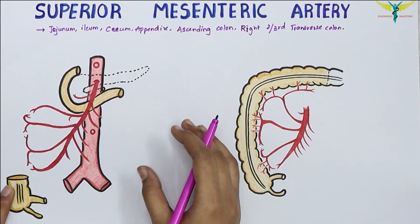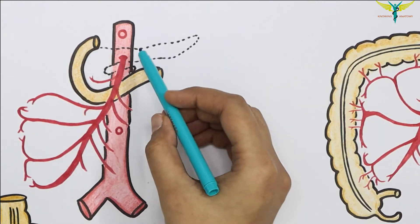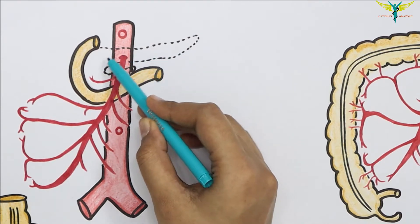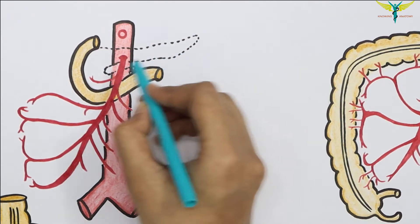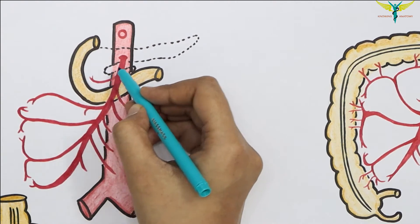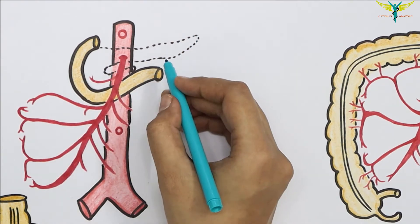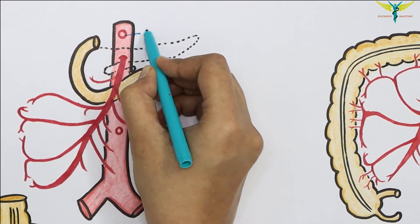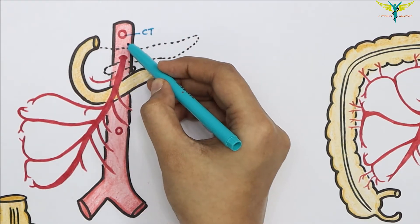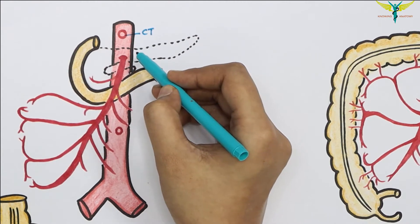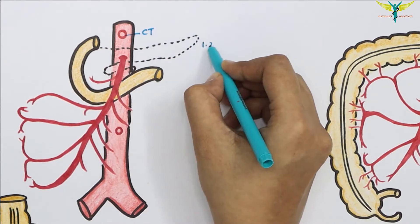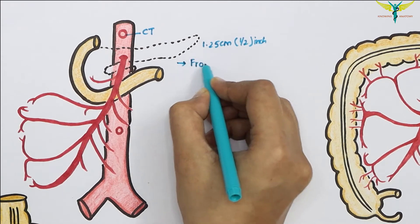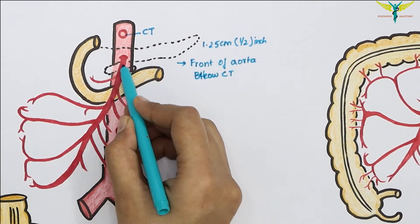Now let's talk about the origin. It arises from the abdominal aorta, behind the body of the pancreas and nearer to its neck, at the level of the L1 vertebra — about 1.2 centimeters below the origin of the celiac trunk. It originates from the front of the aorta.